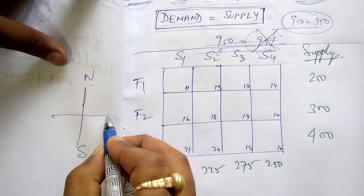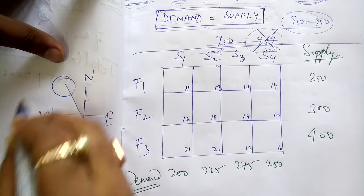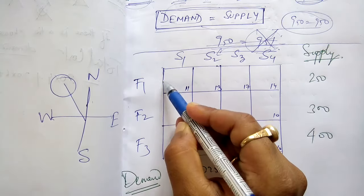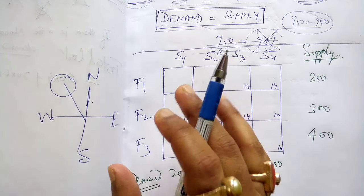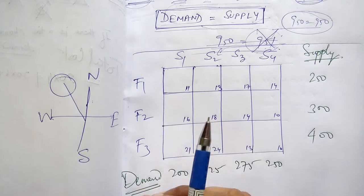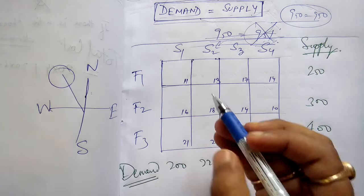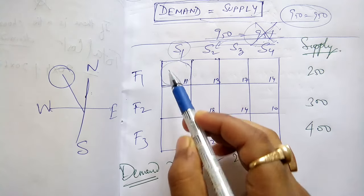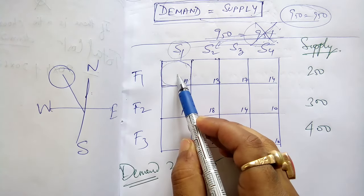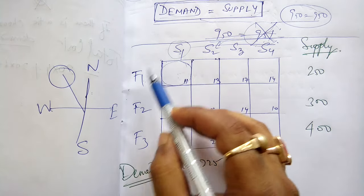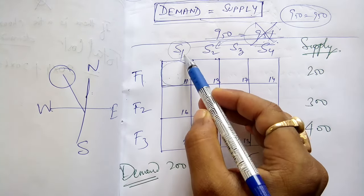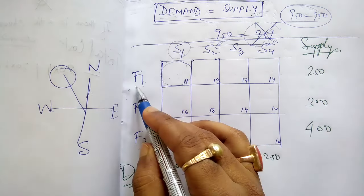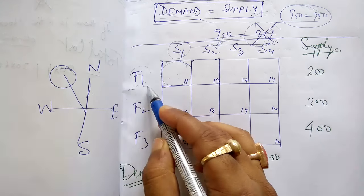So in this table, the northwest box is absolutely the first box — the top-left cell. We will start from here. This box represents the relation between Factory 1 and Store 1. The total demand of Store 1 is 200, and how much can Factory 1 supply? It is 250.